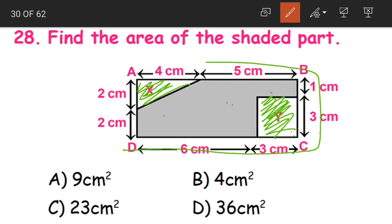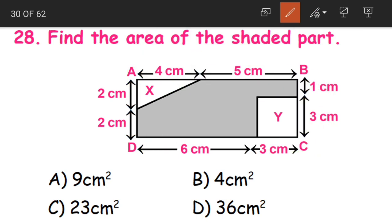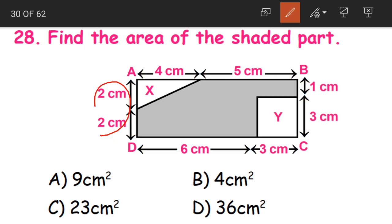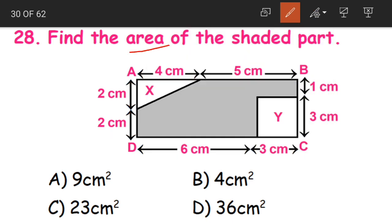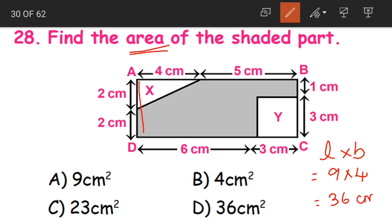First we need to find out the area of the entire figure, then subtract the area of square Y and triangle X. We want the area of the figure without X and Y. So first, what will be the area of the figure? We have to find out the length and breadth. Breadth is 2 plus 2 = 4. See here also 3 plus 1 = 4. And what is the length? 4 plus 5 = 9. And even here the length is 6 plus 3 = 9. So the length and breadth are 9 centimeters and 4 centimeters. So the area will be equal to length into breadth, that is equal to 9 into 4, that is equal to 36 centimeters square.